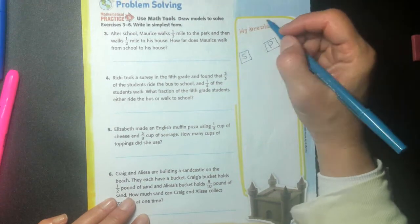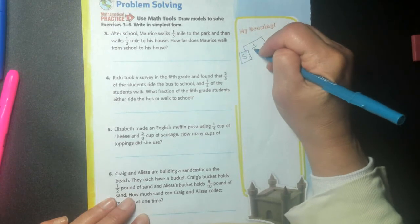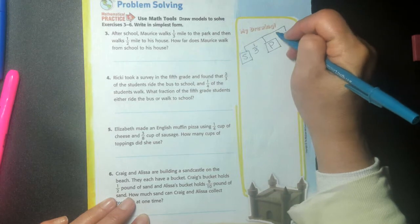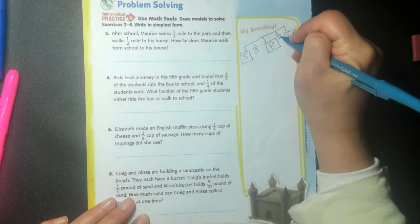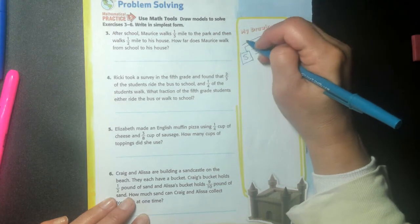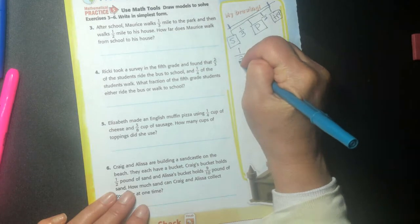So he's going to walk from his school to the park and that is going to be one third of a mile. And then from the park, he's going to have to go home after school. Right? So he's going to go one half of a mile. So I'm going to add one third plus one half and see how far, how long it took him to get home.